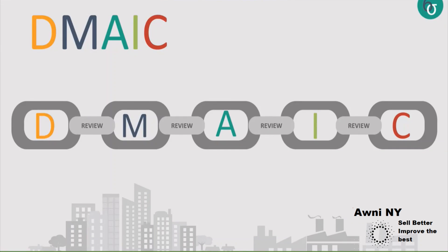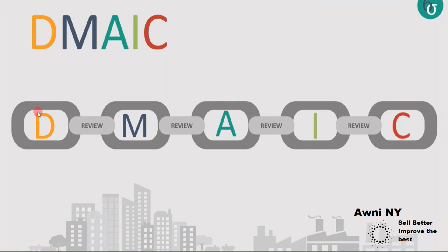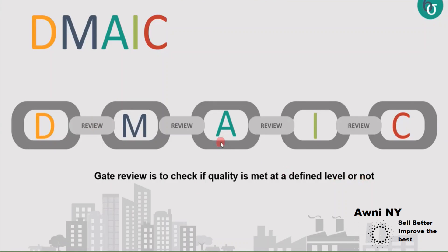Let's now see the fourth philosophy: gate review. After each stage, we will have some gates to check the quality of that stage by performing a review. Taking the DMAIC approach as an example — DMAIC stands for Define, Measure, Analyze, Improve, and Control. We have five stages, and after each stage there is a gate review. Once you have defined the project and move from the Define phase to the Measure phase, there is a gate review to check if quality is met at the defined level. If quality is not met, then rework needs to be done in the Define stage. These checks or gates are very important to detect problems early.